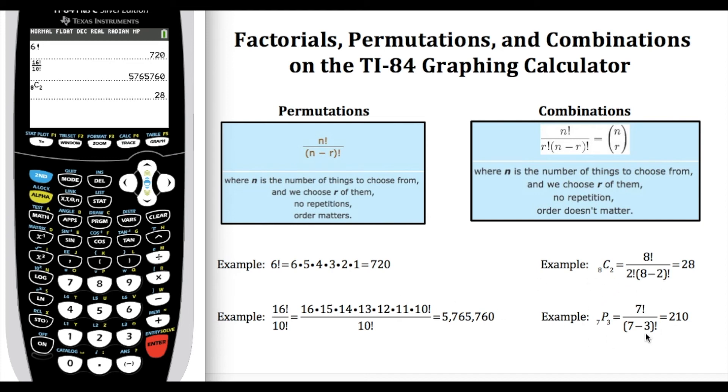Doing this last example here with permutations, I've got 7 objects and I'm taking 3 at a time. I want to know how many permutations I have, so again alpha F2 will get me my menu, I want permutations which is going to be 7, and then I put in 7, arrow over, and I'm selecting 3 of those. Hitting enter will give me the 210.